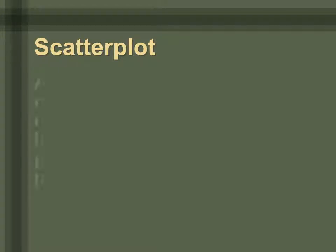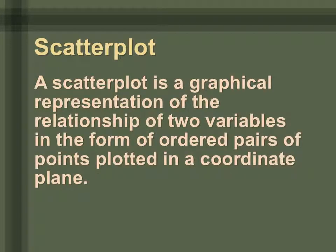Now let's talk about scatter plots. Scatter plots are graphs that represent the relationship between two variables in the form of ordered pairs. We plot them on a coordinate plane just like we've been doing — the only difference is that our ordered pairs now actually mean something. Each value in the pair represents a real-world measurement.